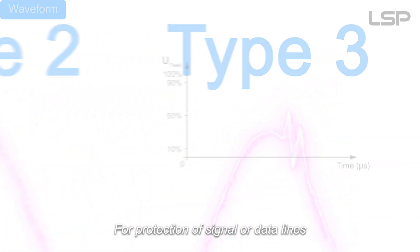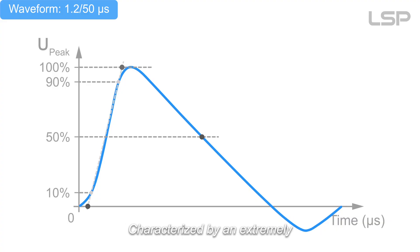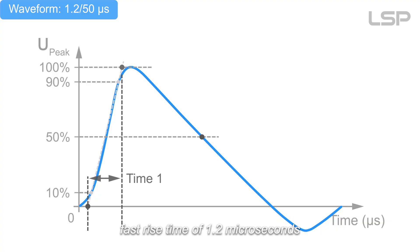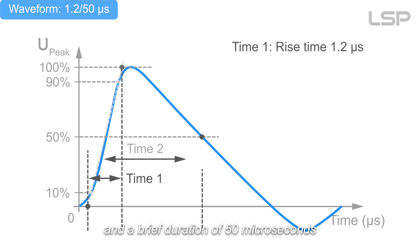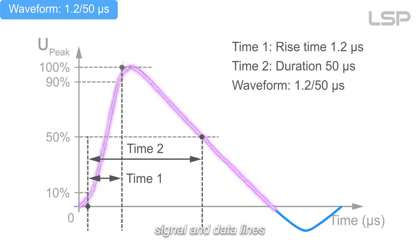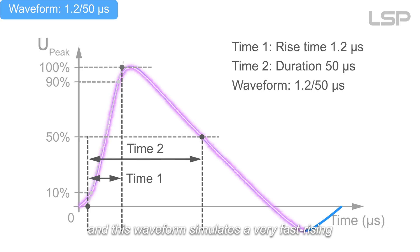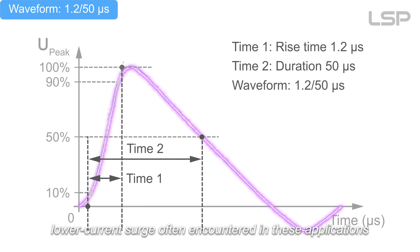For protection of signal or data lines, the 1.2/50 microsecond waveform is indispensable. Characterized by an extremely fast rise time of 1.2 microseconds and a brief duration of 50 microseconds, this waveform is utilized in defining the ratings of SPDs designed for safeguarding signal and data lines. Signal and data lines are highly sensitive to rapid voltage changes, and this waveform simulates a very fast-rising, lower-current surge often encountered in these applications.